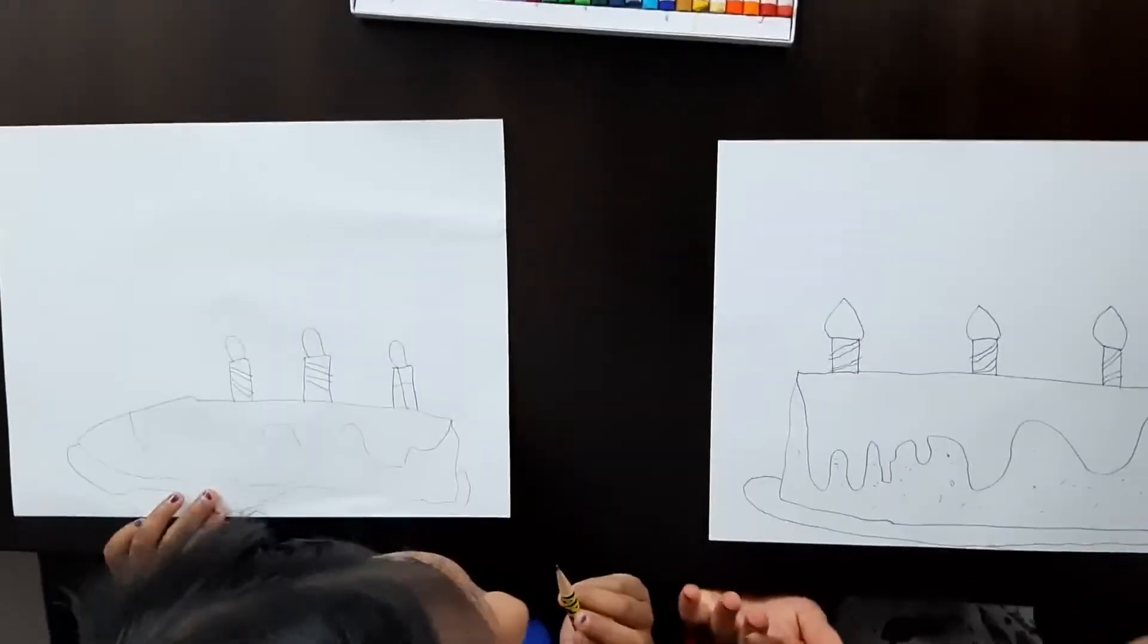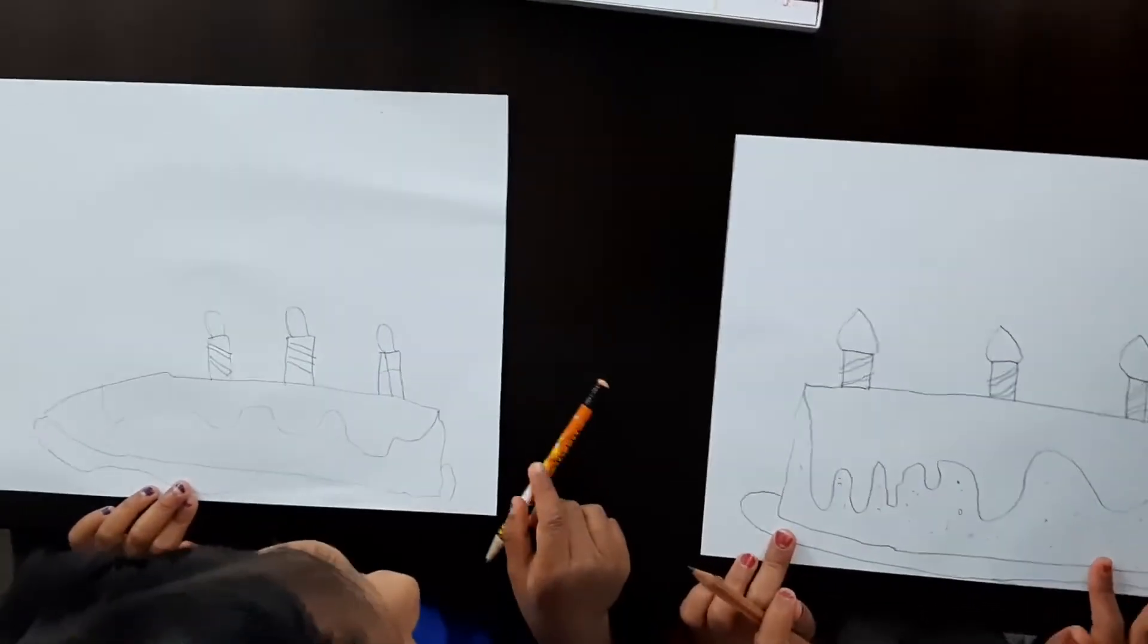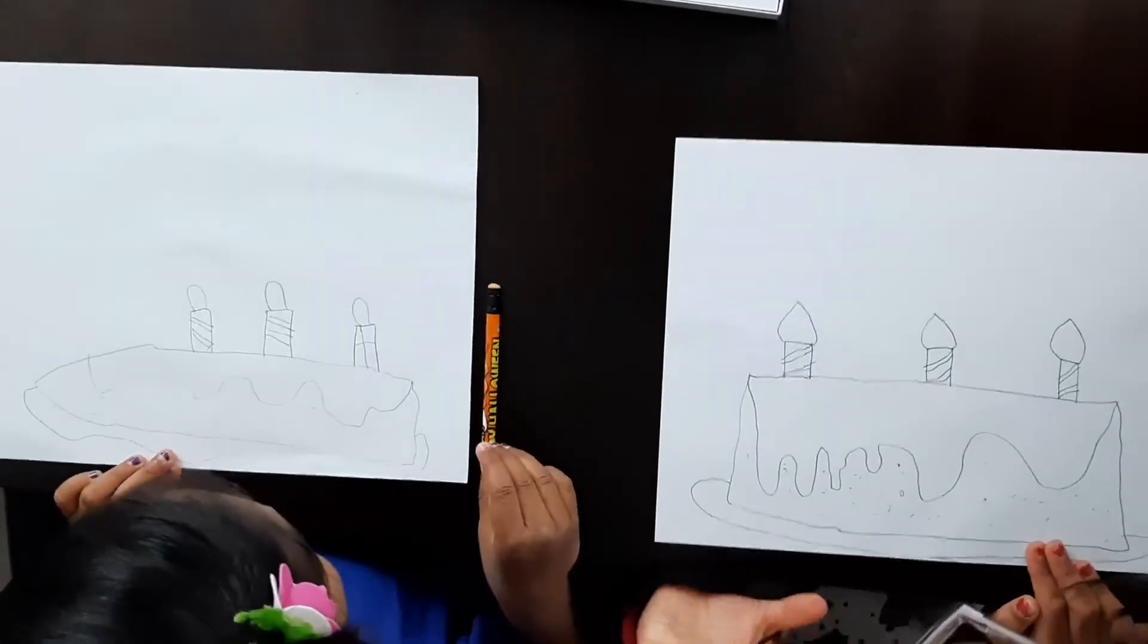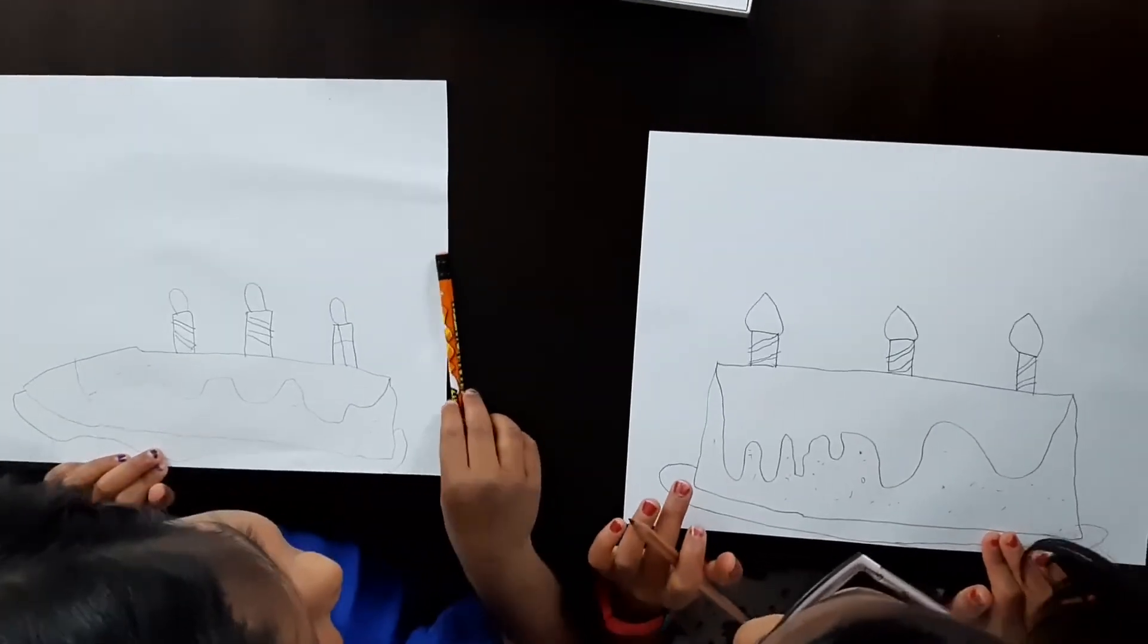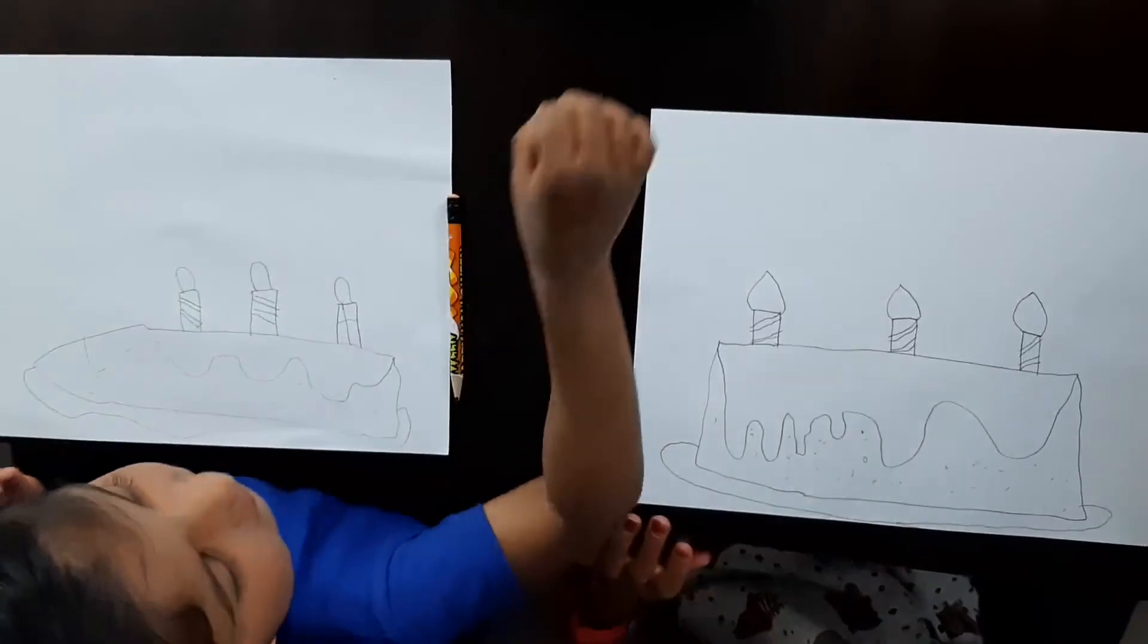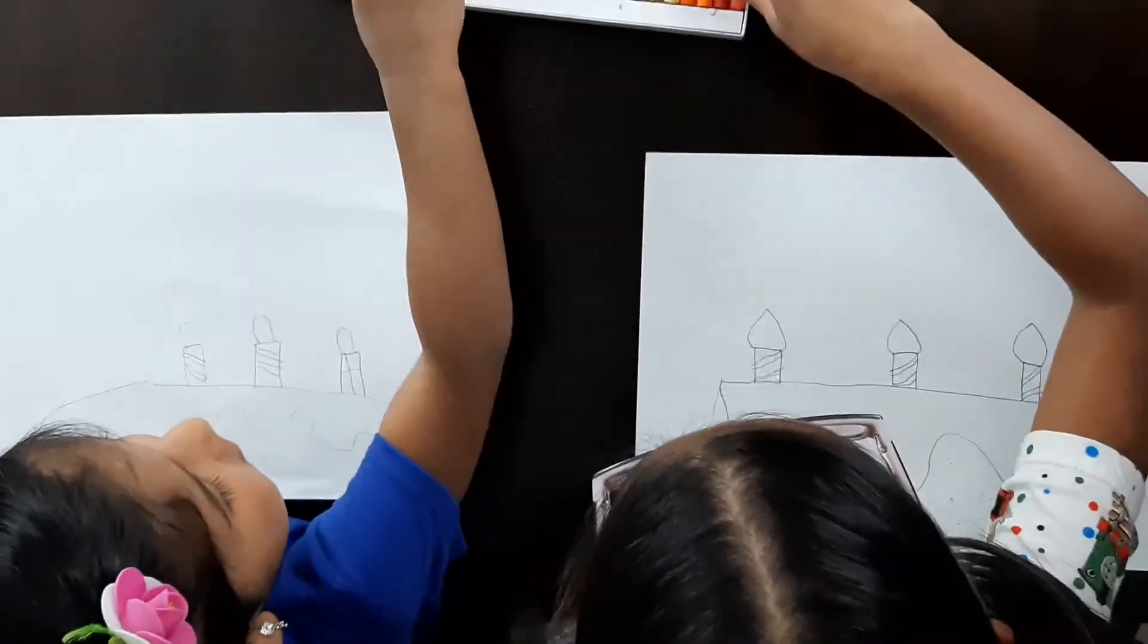Now, we need to color. That's our birthday cake. Looks yummy, right? Yeah. When we're done coloring, it looks more yummy. Okay. Let's start coloring. You can use any color you want.